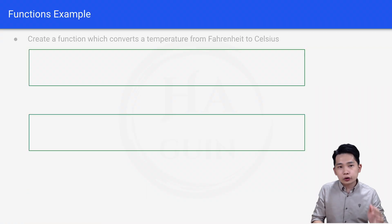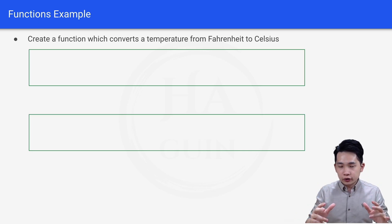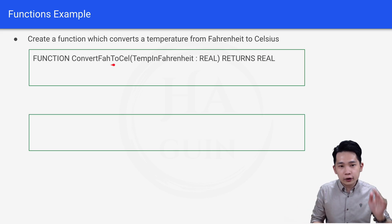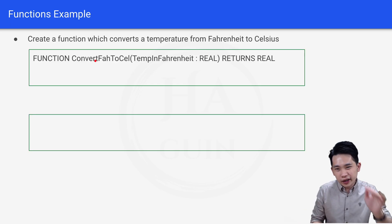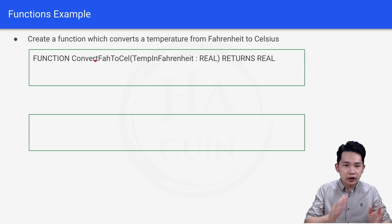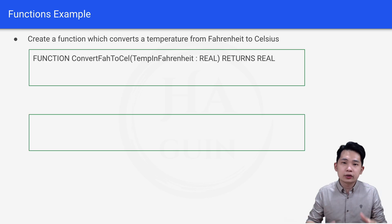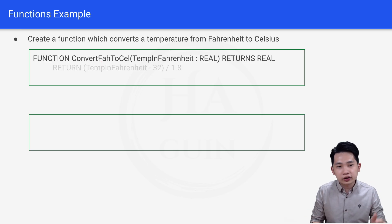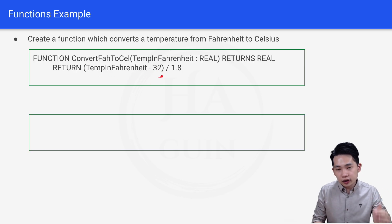Let's look at a function example: create a function that converts a temperature from Fahrenheit to Celsius. The input will be Fahrenheit and we will return Celsius. We write: FUNCTION convertFarToCell(tempInFahrenheit : REAL) RETURNS REAL. We use the name convertFarToCell to keep it short, and we use REAL since temperatures have decimals. The statement is: RETURN (tempInFahrenheit - 32) / 1.8, and finally END FUNCTION.